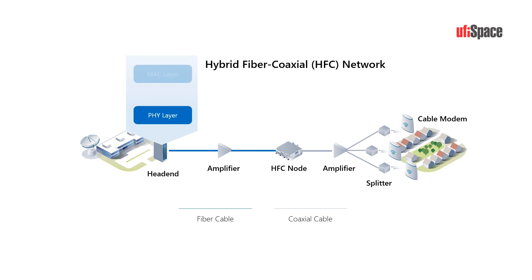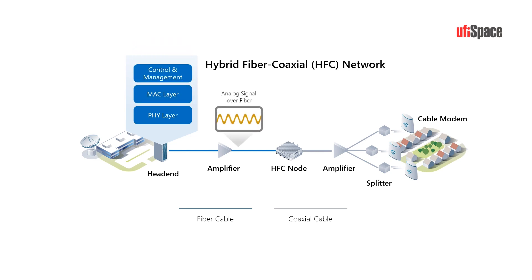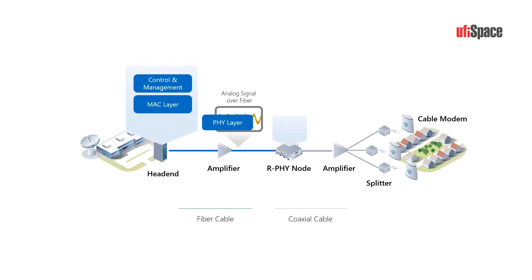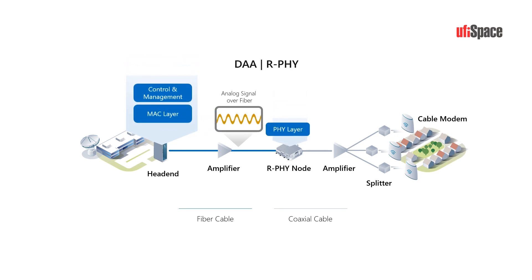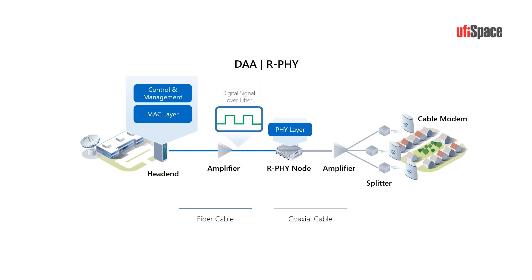The biggest difference comparing DAA from HFC is that DAA relocates some functionality of CCAP to the remote node, closer to the subscriber's location, and adopts digital fiber. The Remote PHY architecture relocates five functions, including modulation and demodulation, to the remote node. By adopting digital fiber, it reduces costs, extends signal range, improves signal-to-noise ratio, and supports higher-order modulation needed for the DOCSIS 3.1 standard.